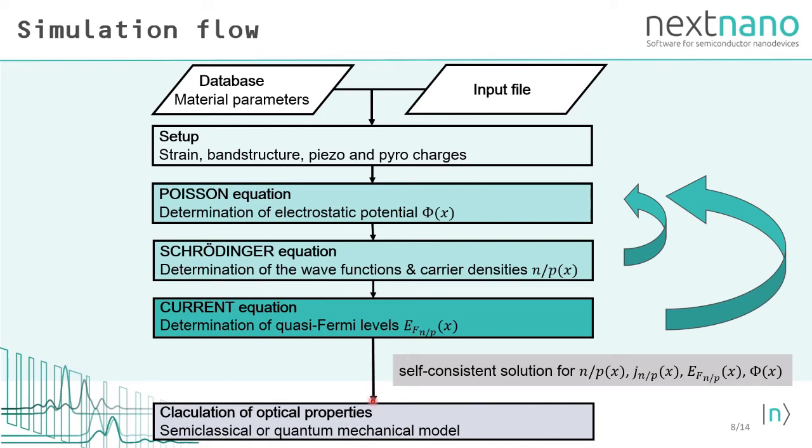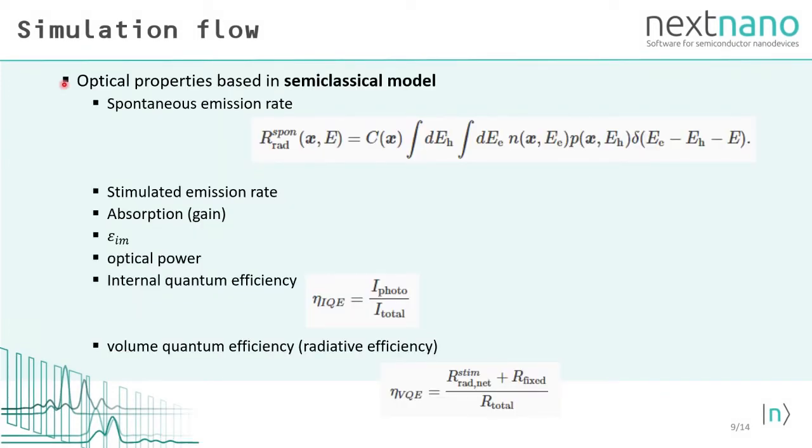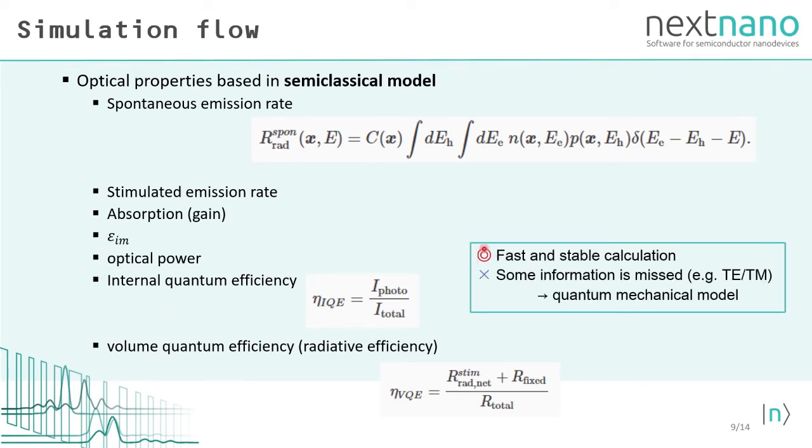These solutions are finally imported to the calculation of optical properties by either semi-classical or a quantum mechanical model. In this video, we solve the Poisson current equations instead of Poisson-Schrödinger current equations. It uses an approximation to get the carrier densities instead of solving Schrödinger equation. In the semi-classical model for optical properties, which is used in our simulation here, the spontaneous emission rate is calculated by this approximation formula, and the other quantities such as stimulated emission rate, gain, and IQE are derived based on this spontaneous emission rate. This model provides fast and stable calculation, whereas it misses some information such as polarization dependencies that could be addressed by a quantum mechanical model.